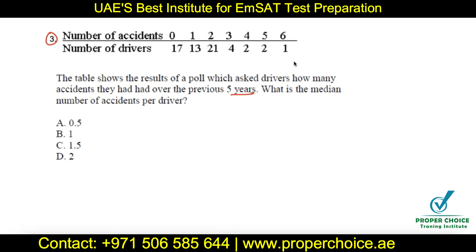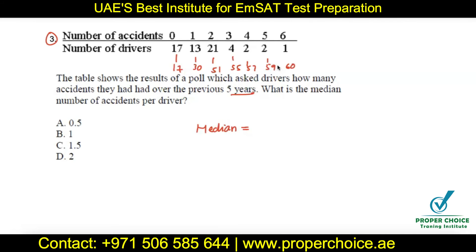For discrete numbers, we arrange them in order from smallest to largest and find the middle. If there is an even number of terms, the median is the average of the two middle numbers. For a frequency table, we add the frequencies cumulatively: 17 people had zero accidents, then 17 plus 13 equals 30 people had zero or one accident, then 51, then 55, 57, 59, and 60 total — so there are 60 drivers.